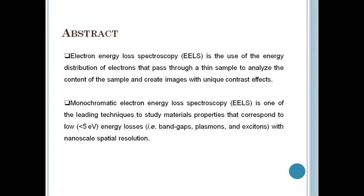These characteristics are observed in different energy regions depending on the energy loss. Electron energy loss spectroscopy is the use of the energy distribution of electrons that pass through a thin sample to analyze the content of the sample and create images with unique contrast effects. EELS instrumentation is typically incorporated into a transmission electron microscope (TEM) or scanning transmission electron microscope (STEM), which use high electron energies of 60 to 300 kV to interrogate the sample. The electrons must transmit through the sample, requiring an electron-transparent sample, and can interact either elastically (no energy exchange) or inelastically — it is these inelastic interactions that EELS exploits to extract information.